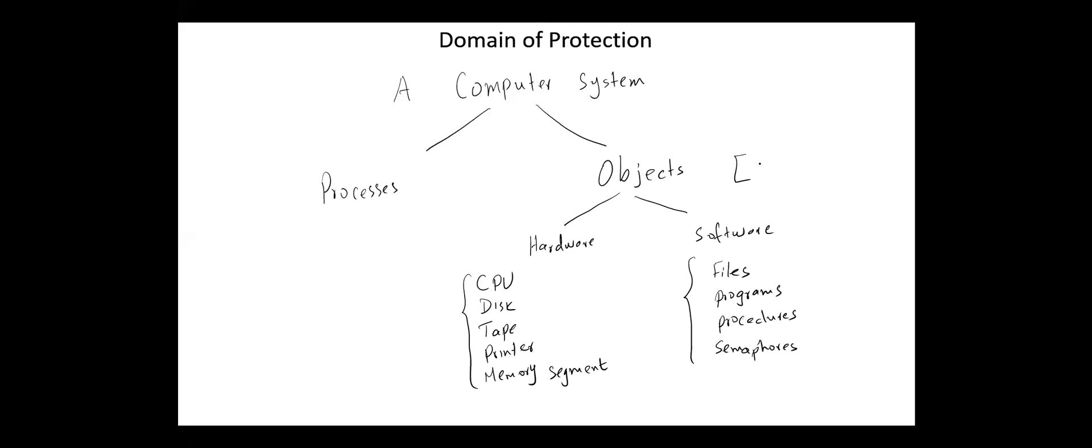Each object has a unique name that differentiates it from other objects in the system. Each object can be accessed only through well-defined operations.